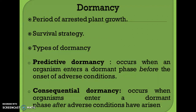An example of predictive dormancy is when photoperiod and decrease in temperature are used by many plants to predict the onset of winter. Before the onset of winter they may show bud dormancy.